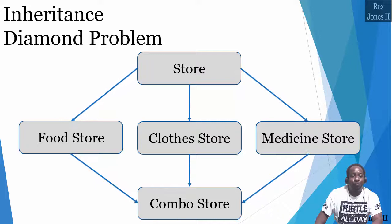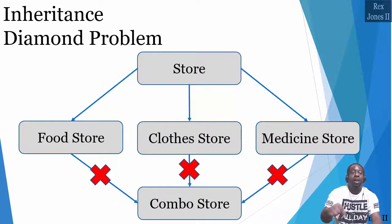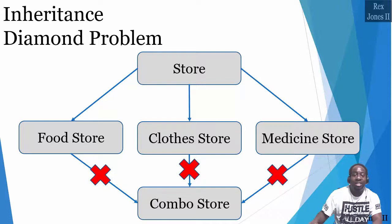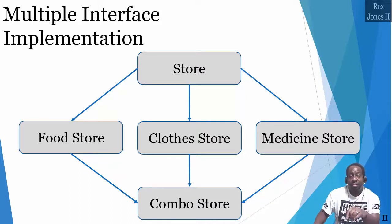Do you see the diamond? Combo store will not inherit food, clothes, or medicine through inheritance, although it's possible in real life. However, we can combine all stores when one class — which is combo store — implements more than one interface. There is no limit to the number of interfaces a class can implement.